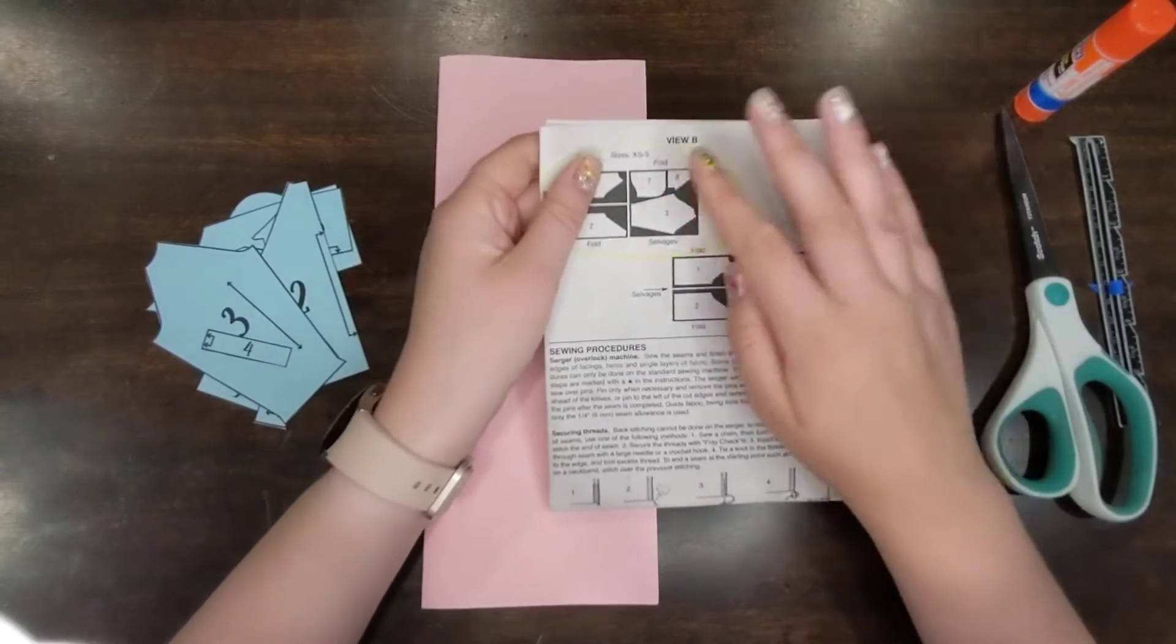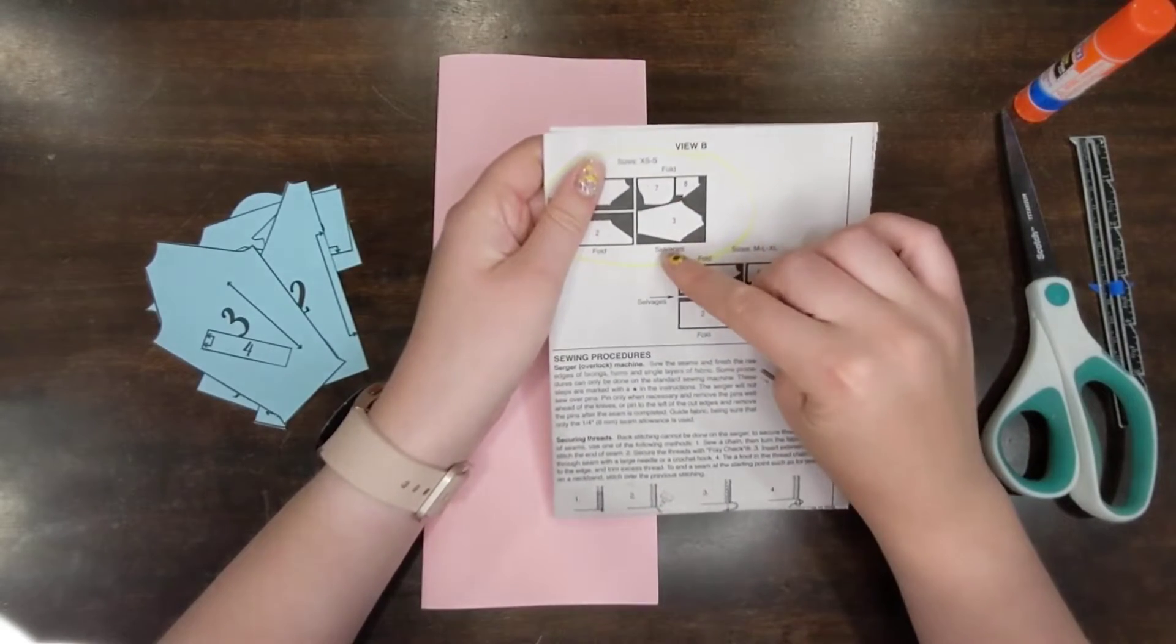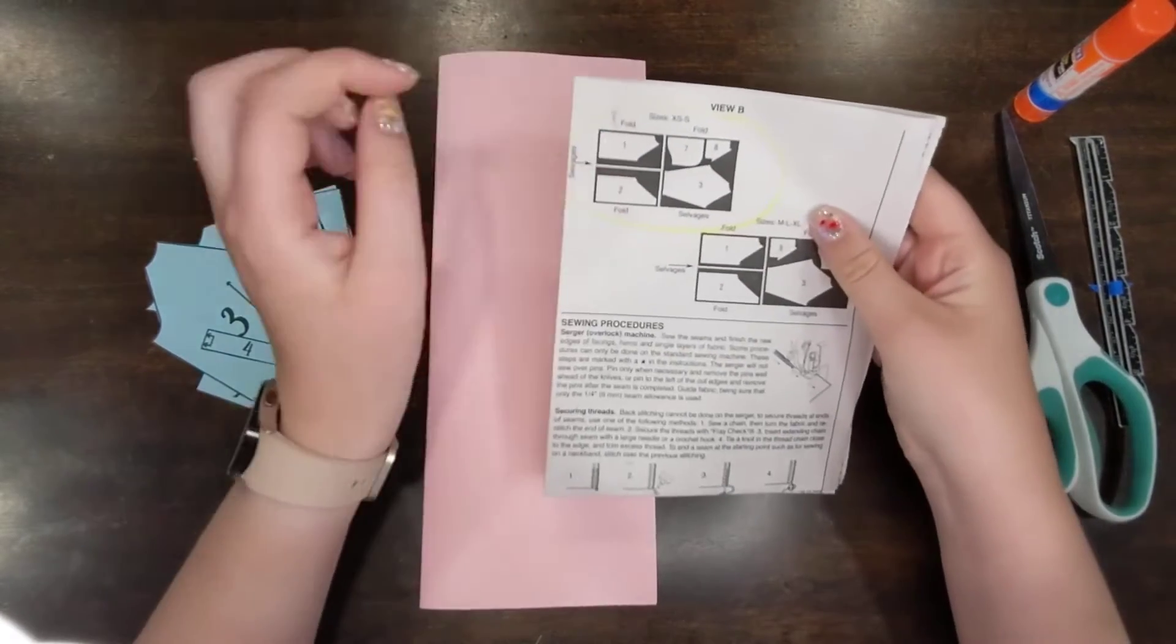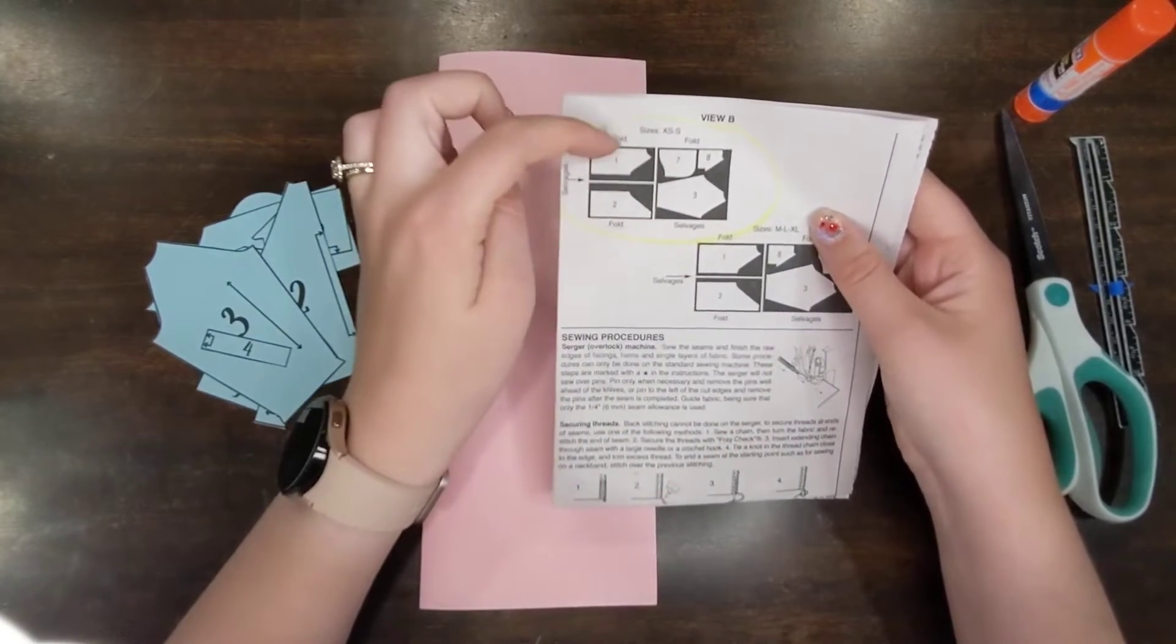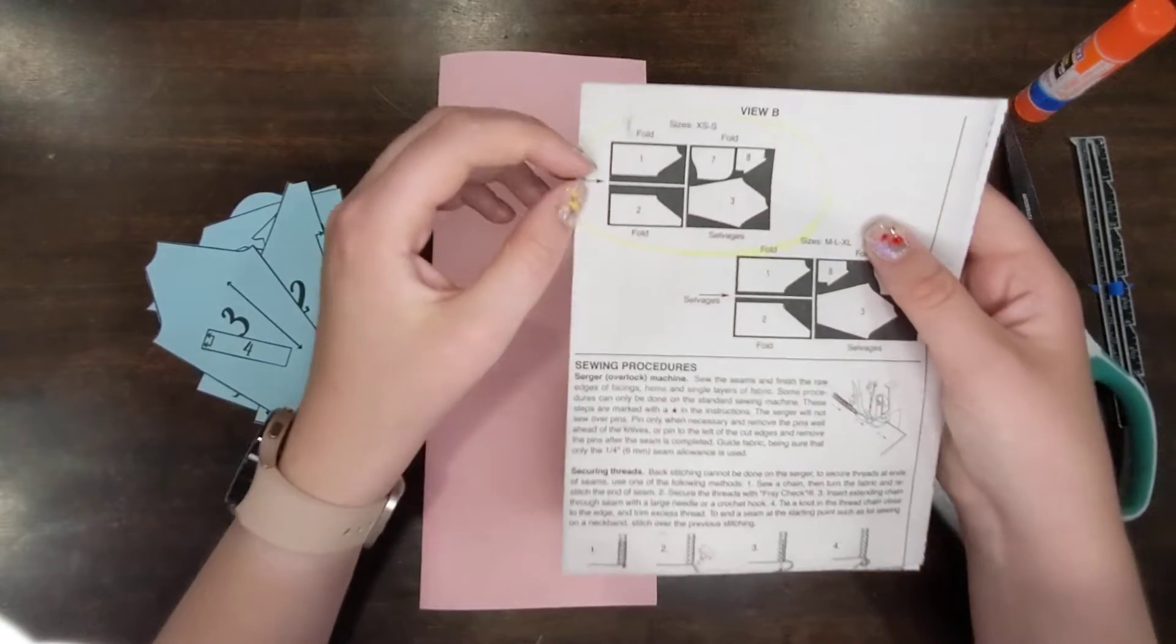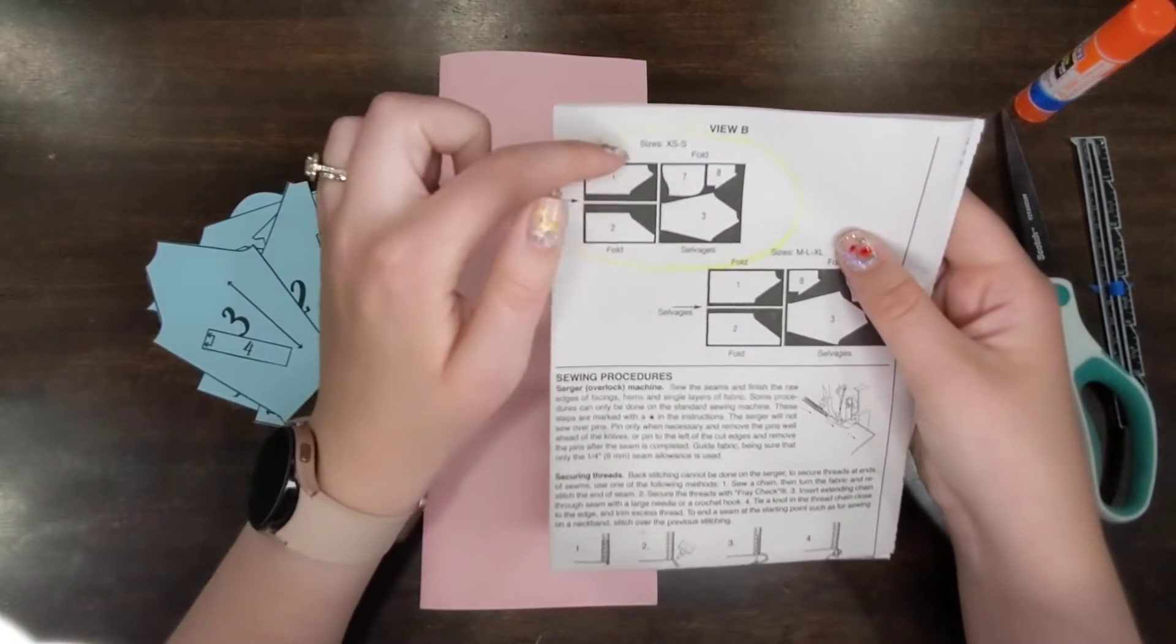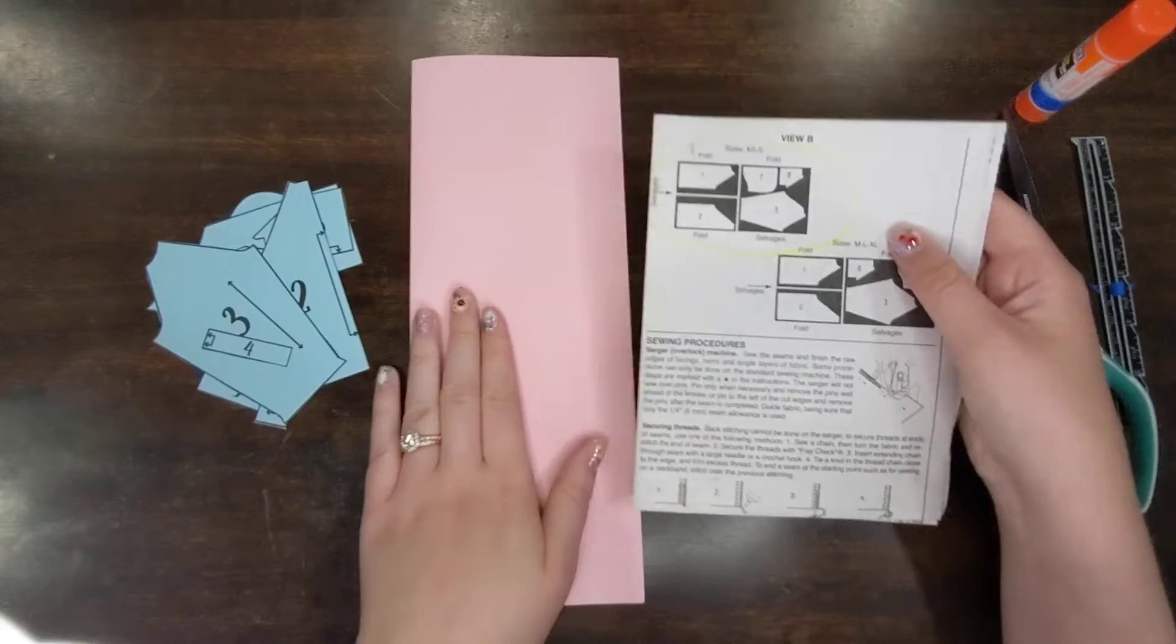First, we're going to lay out our fabric so that there's fold on one edge, selvedge on the other. Then, after we lay these parts out, we're going to cut it in half and lay out the fabric so that the selvedges are in the middle and there's a fold on the top and on the bottom.